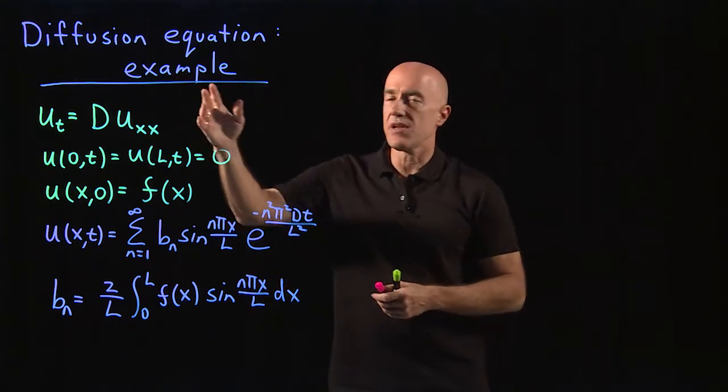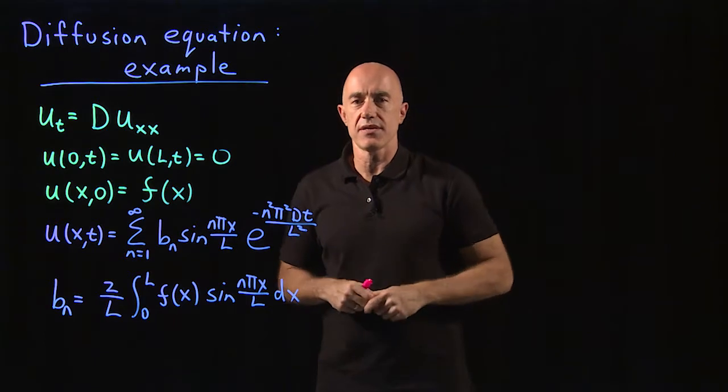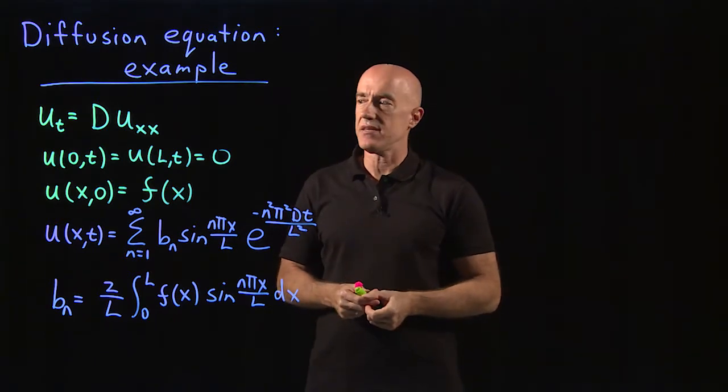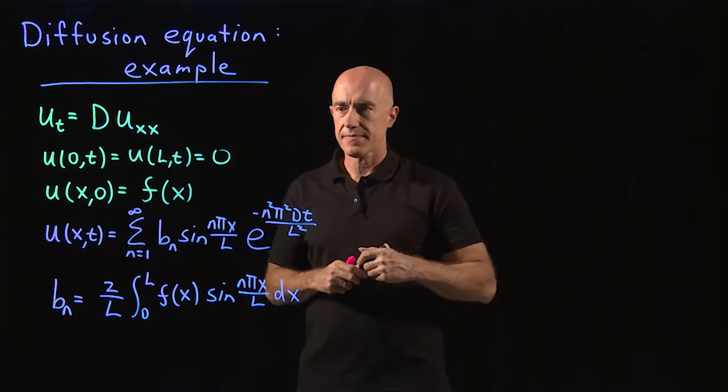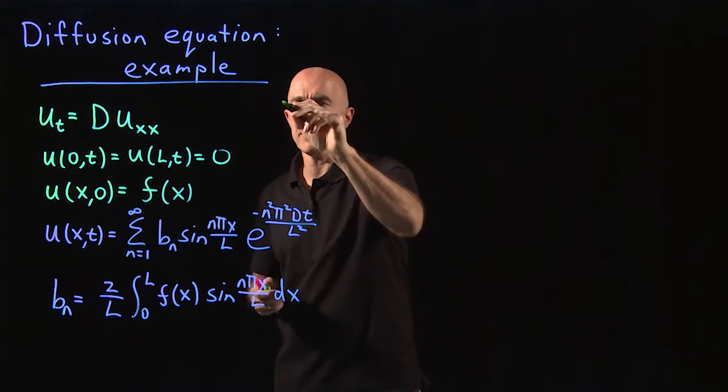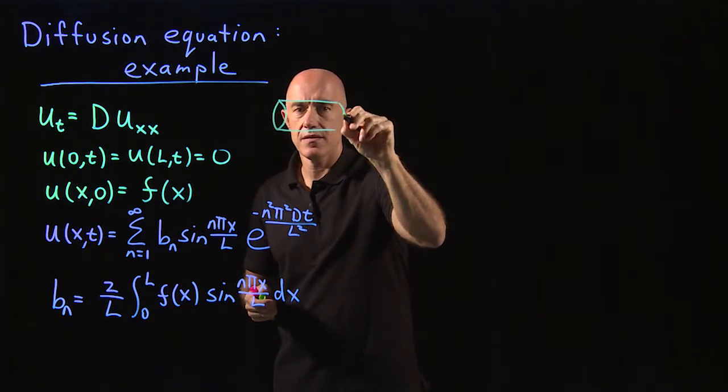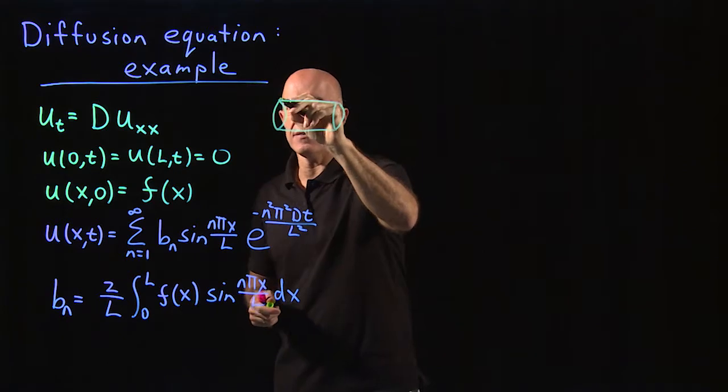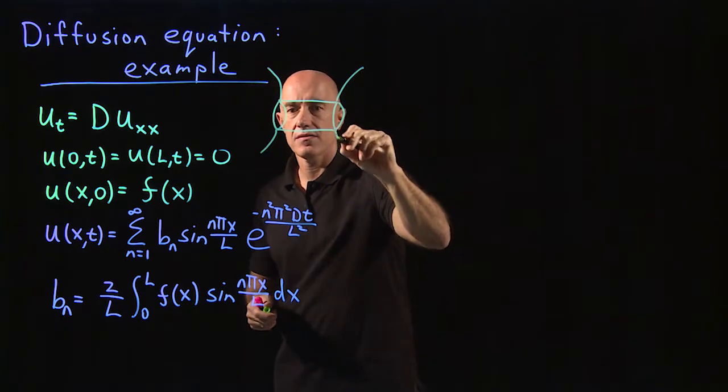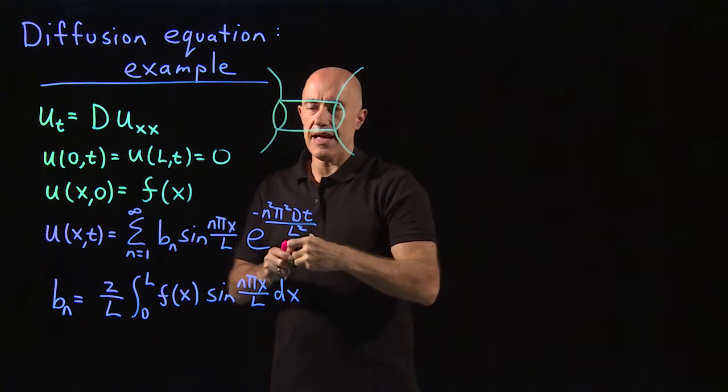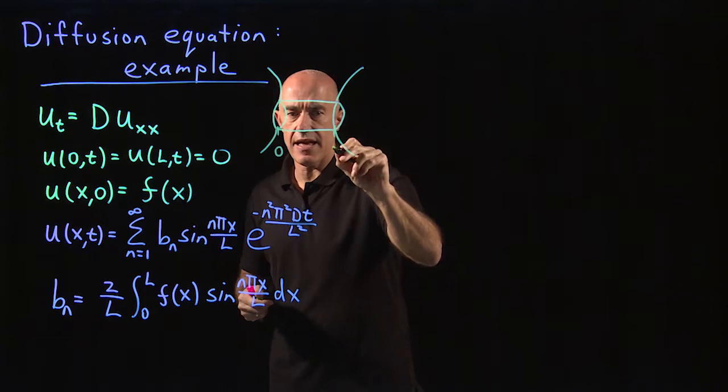So in this video I want to work an example where I tell you what the initial concentration of the dye is and then we solve, we see what the solution looks like. So let me draw a picture of our pipe. Here is the pipe. It has very large reservoirs at the end. And it's starting at zero and ending at L.